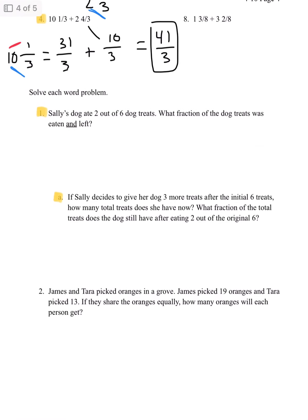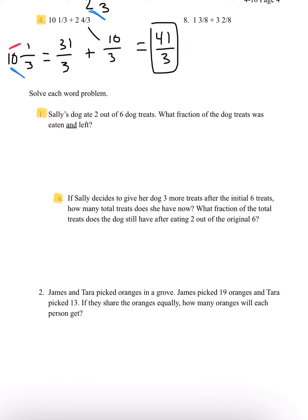Moving on to the word problems, I'm going to be going over number 1. It says, Sally's dog ate 2 out of 6 dog treats. What fraction of the dog treats was eaten and left? So we know that her dog ate 2 over 6. How much was eaten? In fraction, it's just going to be 2 over 6. And how many is left? We just have to subtract 6 by 2, and we get 4 over 6. So there are 4 over 6 dog treats left.